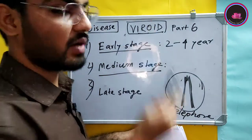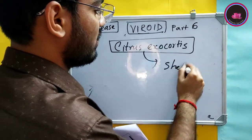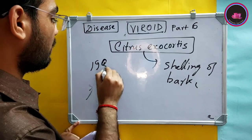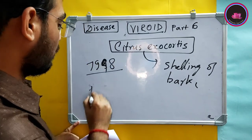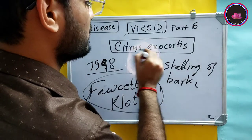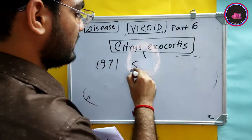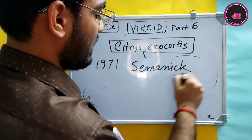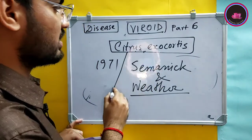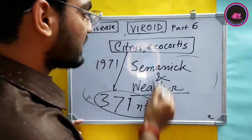This telephone pole appearance is caused by the viroid coconut cadang-cadang. The important symptom of citrus exocortis is the scaling of bark. In 1948, Fawcett and Klotz first reported citrus exocortis based on this bark scaling. In 1971, Semancik and Weathers calculated the genomic size of the citrus exocortis viroid and found it to be 371 nucleotides — the largest viroid known.